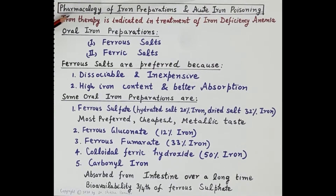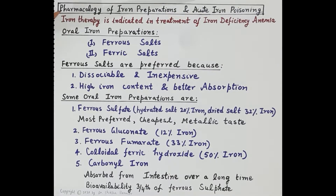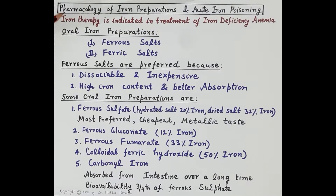This is the third video — hematinics part three — in the series on hematinics. As we know, hematinics are the substances required in the formation of RBCs. The topic of today's discussion is the pharmacology of iron preparations and acute iron poisoning.